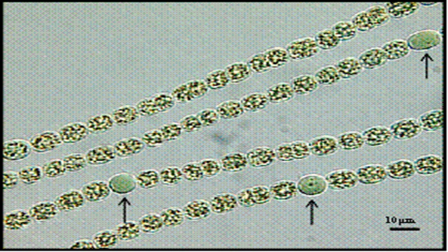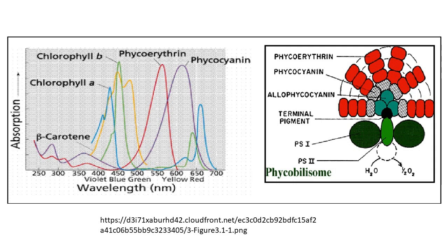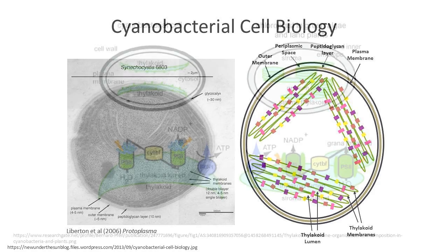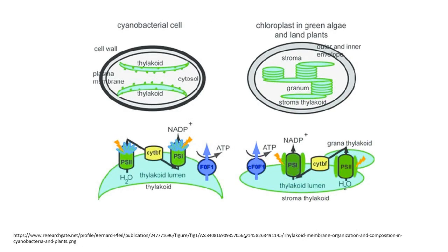Cyanobacteria use photosynthetic pigments such as carotenoids, phycobilins, and various forms of chlorophyll, which absorb energy from light. Unlike heterotrophic prokaryotes, cyanobacteria have internal membranes — flattened sacs called thylakoids — where photosynthesis is performed.